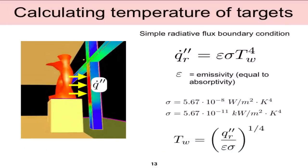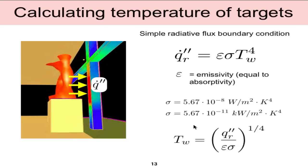We showed different ways to use a point source calculation to get an incident heat flux to a target — an analytical method and an empirical method. We also looked at the cylindrical approximation of a flame and how FDS calculates incident heat fluxes. Finally, we looked at how to calculate the temperature of targets, which is very important for bringing our incident heat flux back to an actual physical temperature that we can compare to some critical temperature of the structure or target we're interested in.